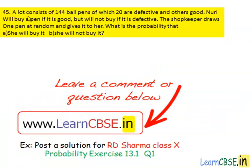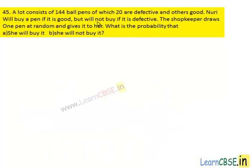Let's see the 45th question. A lot consists of 144 ball pens of which 20 are defective and others good. Nuri will buy a pen if it is good but will not buy it if it is defective. The shopkeeper draws one pen at random and gives it to her. What is the probability that she will buy it, and she will not buy it?